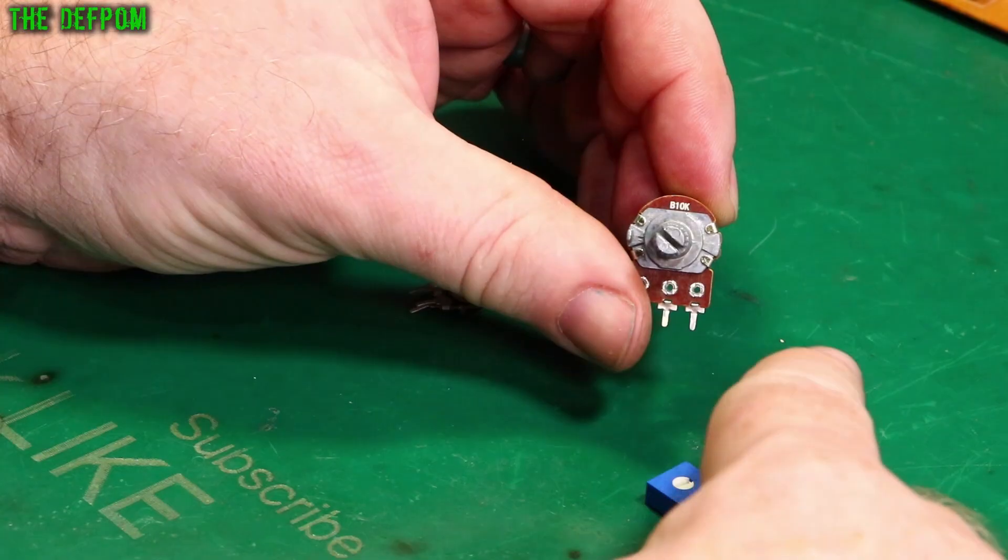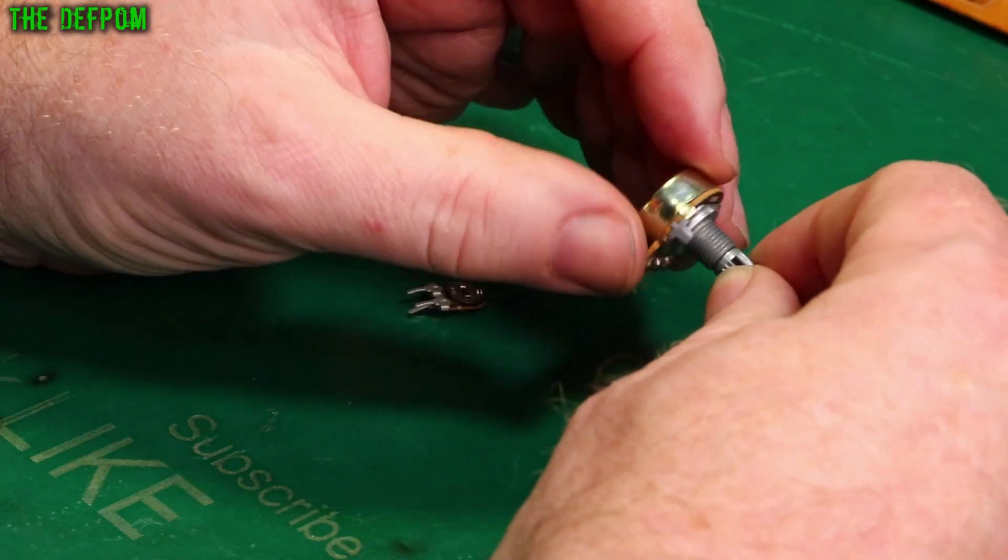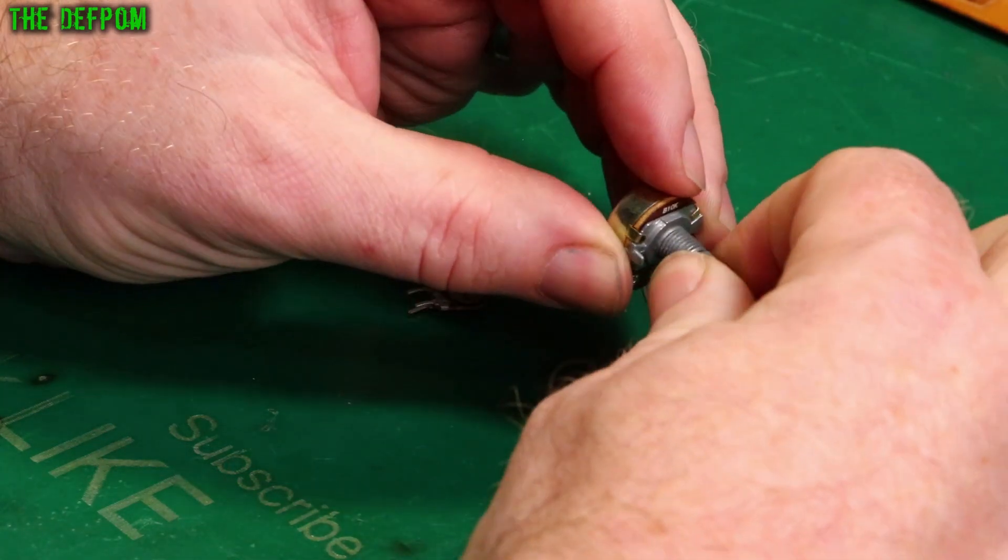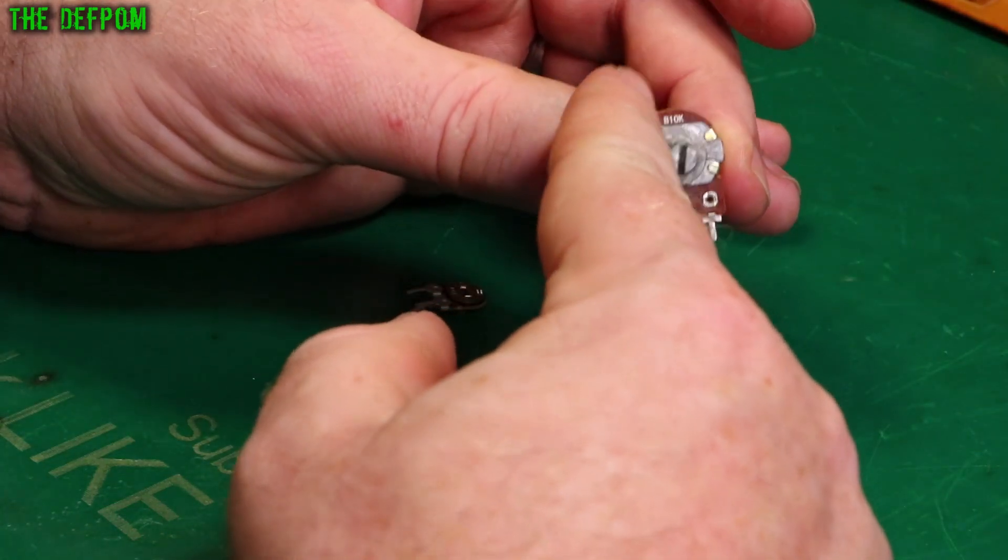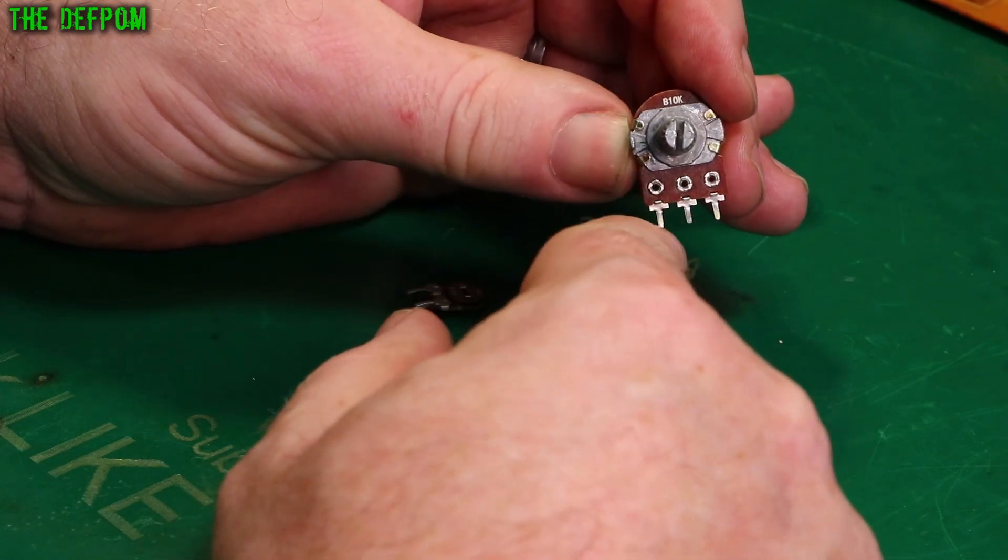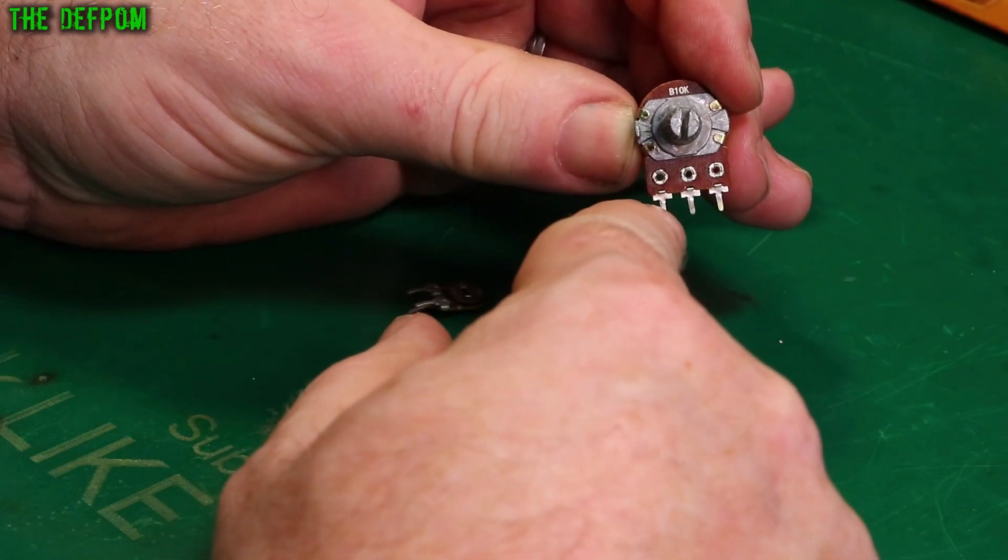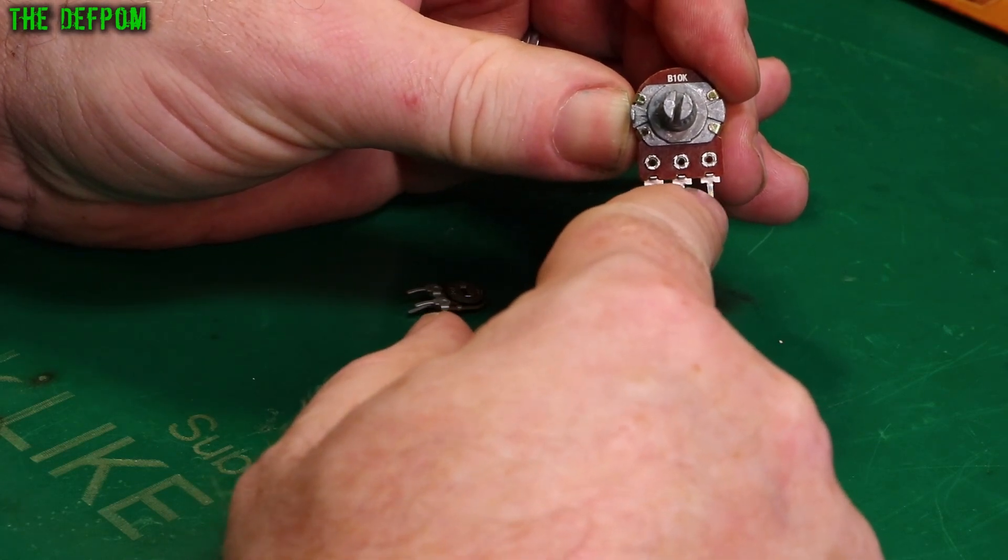These are also adjustable ones. So this particular one's a 10 kilo ohm so 10,000 ohms and there's linear and logarithmic types as well. So if you physically move to the halfway position so it's halfway around on the linear if it's a 10k it'd be 5k from the center pin there to the outer pin and the same from this side 5k from there to there as well.